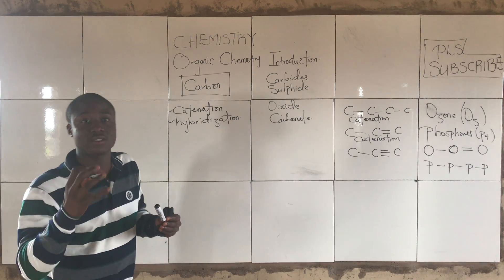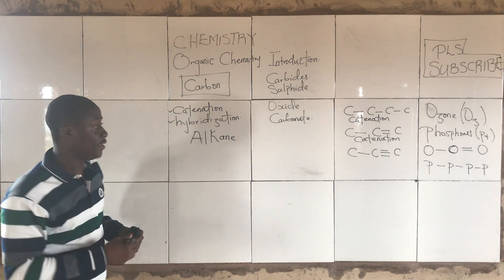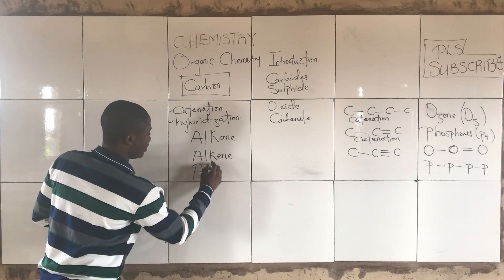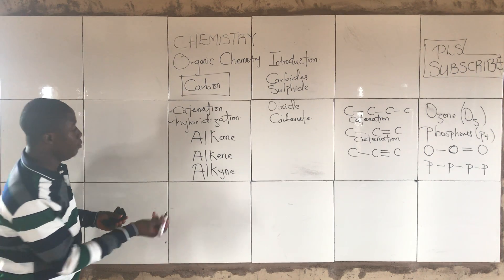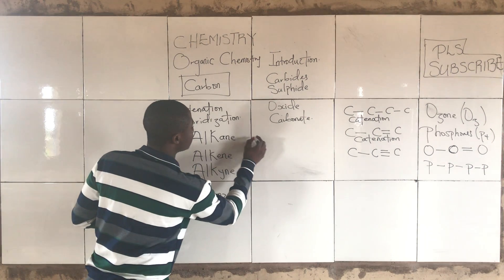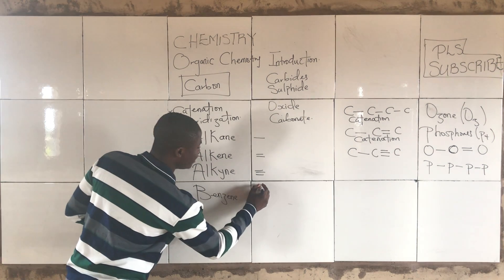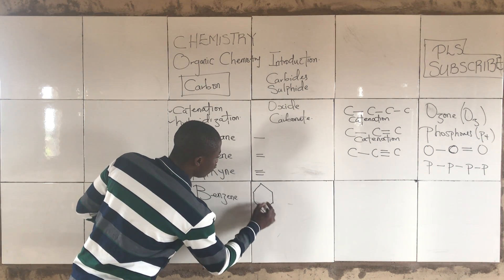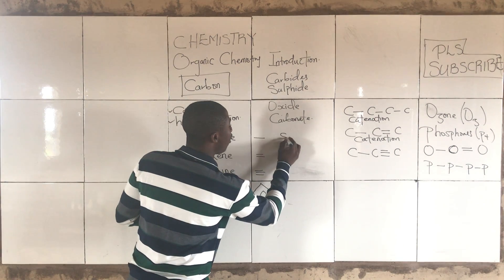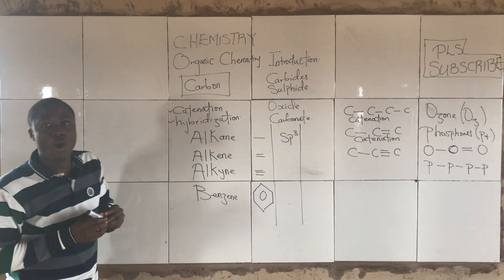Talking about hybridization for the first group of organic compounds called alkanes — alkanes are also called paraffins. For alkanes, they have single bonds and they are all sp3 hybridized.